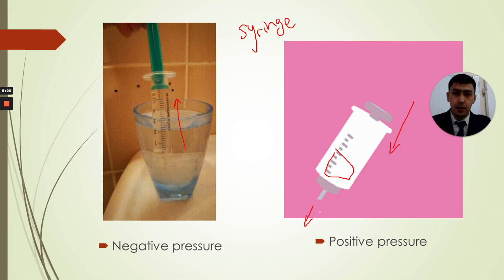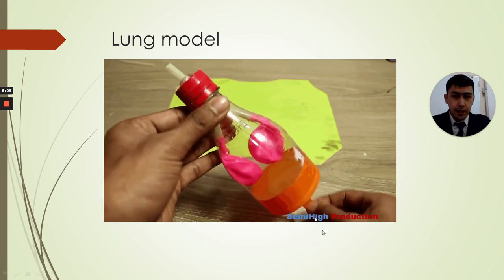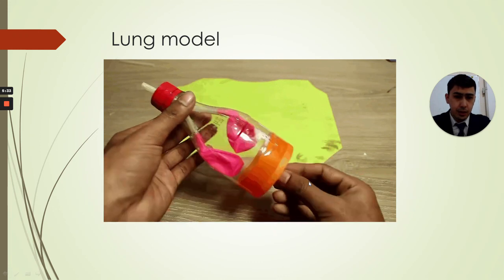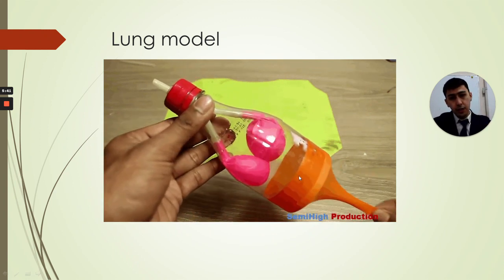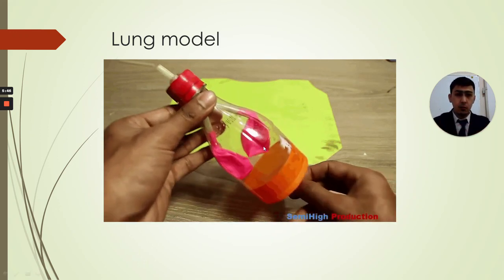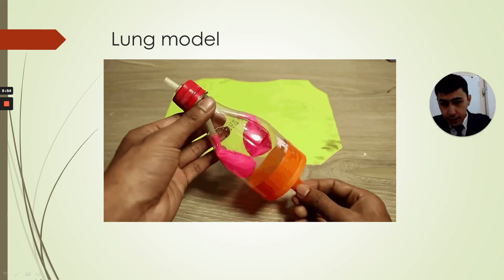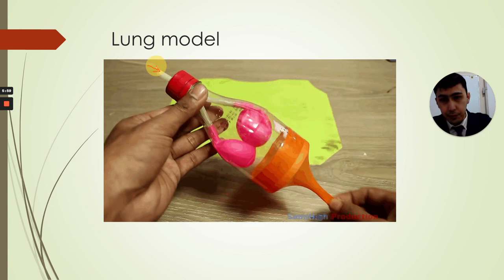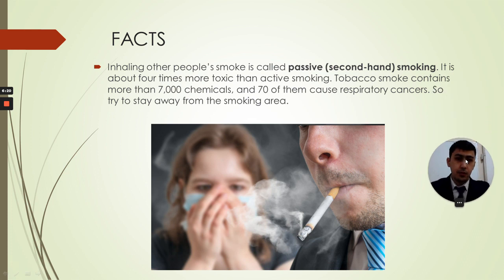That's how the lung model works. Imagine these are the two lungs, and this orange rubber balloon is the diaphragm. When you pull the diaphragm down, the lung volume increases — just as I explained. The pressure decreases and the lungs fill with air, which comes in through this tube — like our nose. These are the lungs, this is the nose, and this works like the diaphragm. This is the model of the lung.